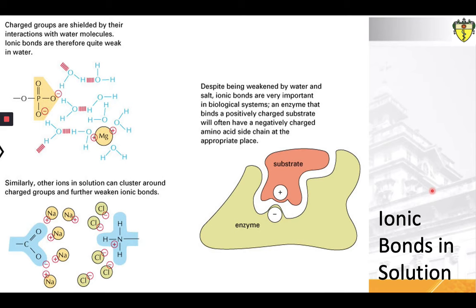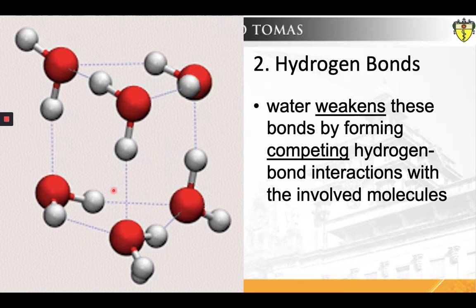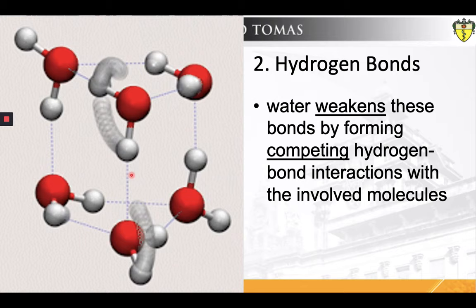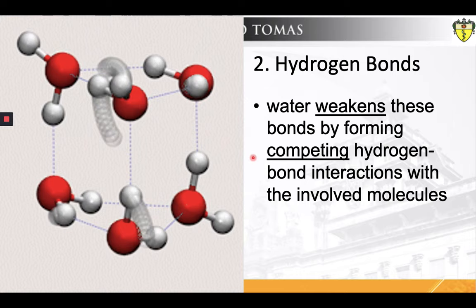The second non-covalent interaction is the hydrogen bond. A hydrogen bond — often informally abbreviated as H-bond — is a partial intermolecular bonding interaction between a lone pair on an electron-rich donor atom like nitrogen or oxygen, and the antibonding molecular orbital of a bond between hydrogen and a more electronegative atom or group. Simply stated, this bond represents a special form of polar interaction in which an electropositive hydrogen atom is partially shared by two electronegative atoms. Unlike a typical electrostatic interaction, this bond is highly directional, being strongest when a straight line can be drawn between all three of the involved atoms. Since water molecules are held together by hydrogen bonds themselves, water will weaken hydrogen bonds by forming competing hydrogen bond interactions with the involved molecules. Hydrogen bonds are only one-fourth of their strength in water systems as compared to that in a vacuum.